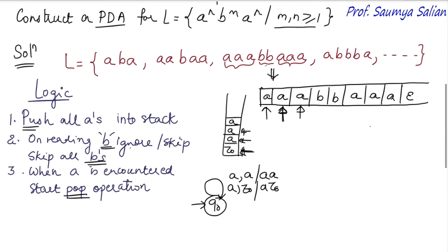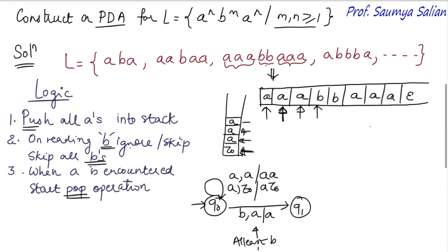Now when I read a B with stack top A, I perform a skip operation — the stack top remains unchanged. This transition also helps ensure that at least one B is present in the language. A loop transition handles all B's: on reading B with stack top A, perform skip operation and keep the stack top as-is.